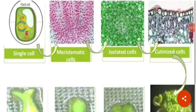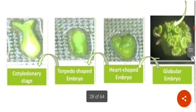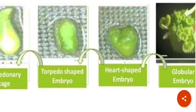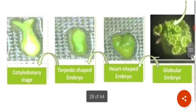Here you can see single cells, then meristematic cells, then isolated cells, then cutinized cells. This is the globular embryo, then the heart-shaped embryo, then the torpedo-shaped embryo, and finally the cotyledonary stage. These are the different stages in the development of the somatic embryo.